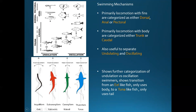Another useful thing to talk about is undulation versus oscillation. Undulation is more of a sine wave propagating down the body, like this eel or the stingray. Oscillation is more of a heaving motion, like when a tuna swims — imagine putting your hand out, keeping it rigid, and moving it back and forth. We can divide undulation and oscillation into four subcategories going from an eel to a tuna with two intermediate steps.